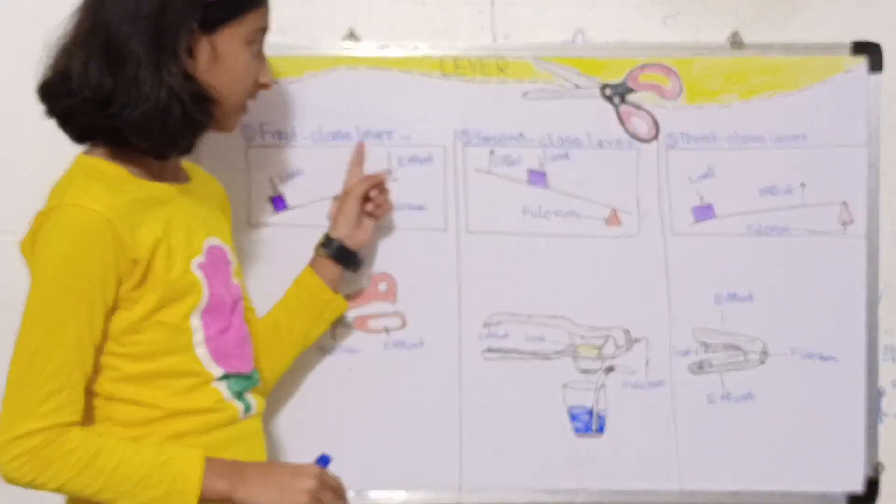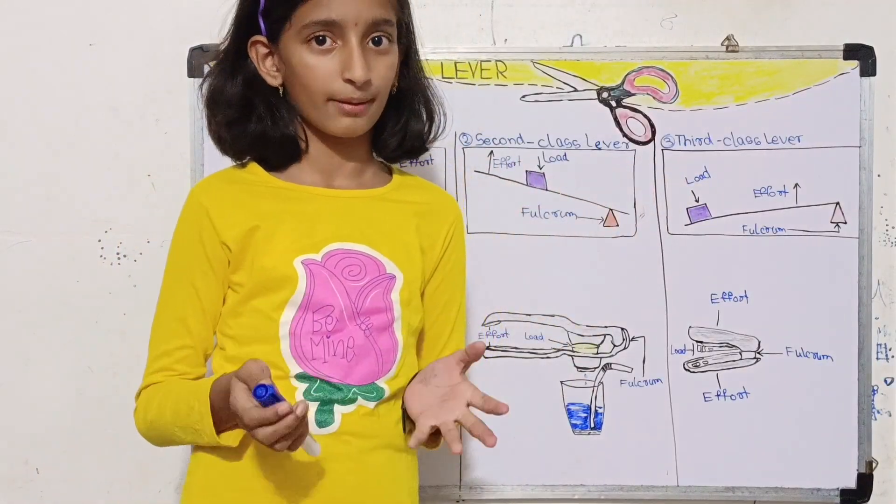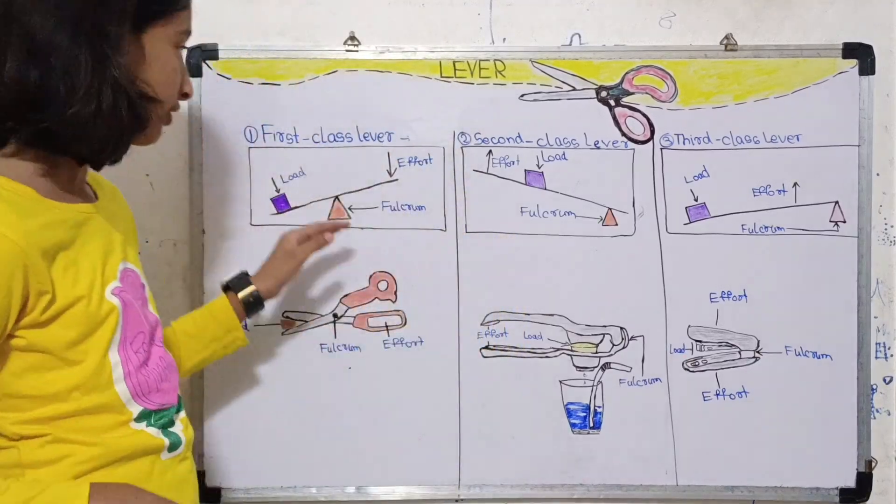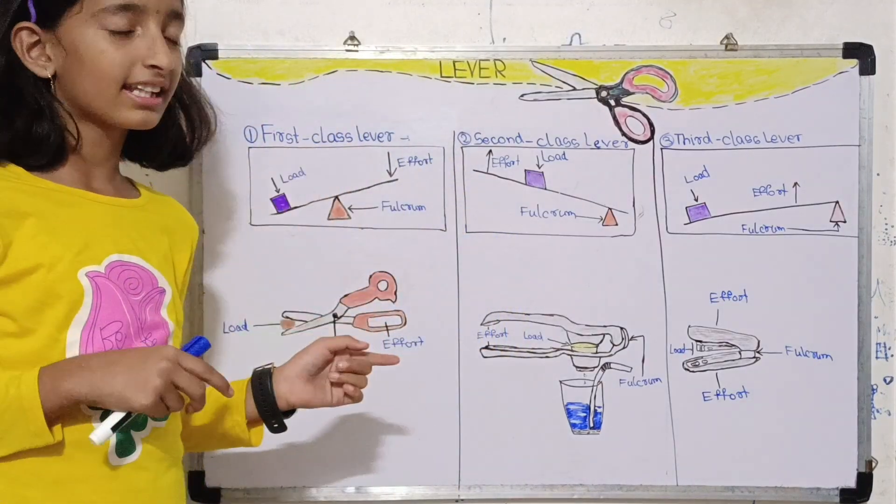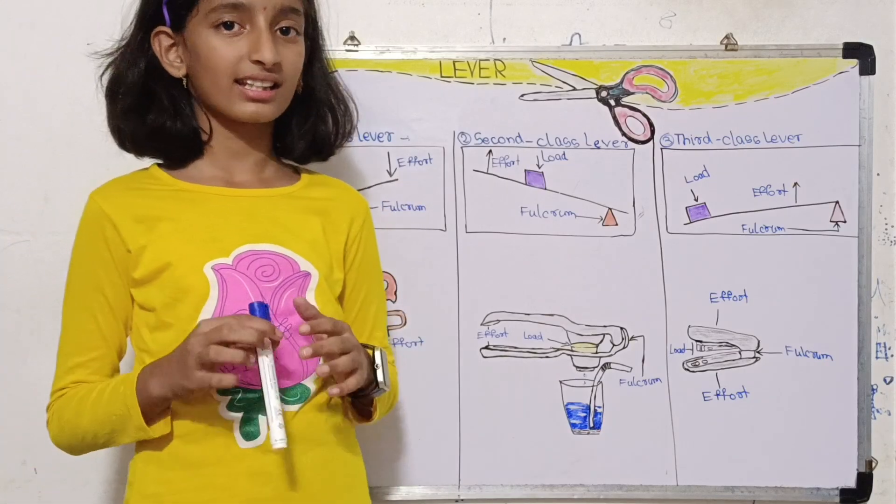First class lever, second class lever, and third class lever. Let's know them one by one. First, let's have information about first class lever. The fulcrum is between the load and effort. Let's have an example which is scissors.